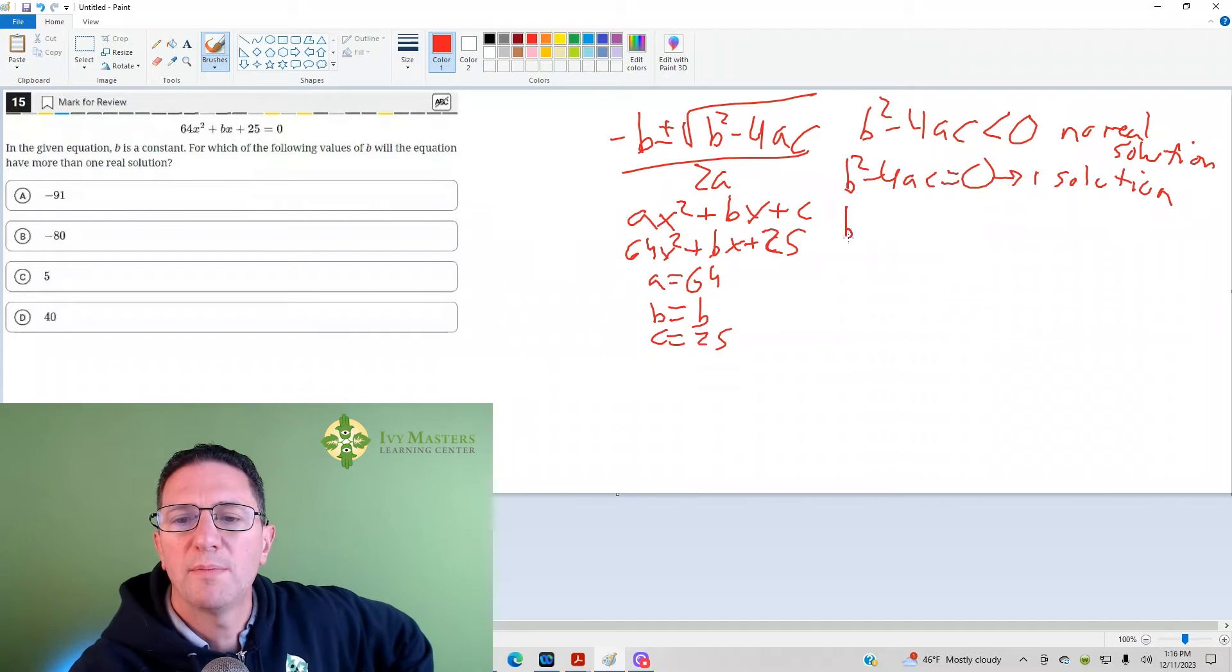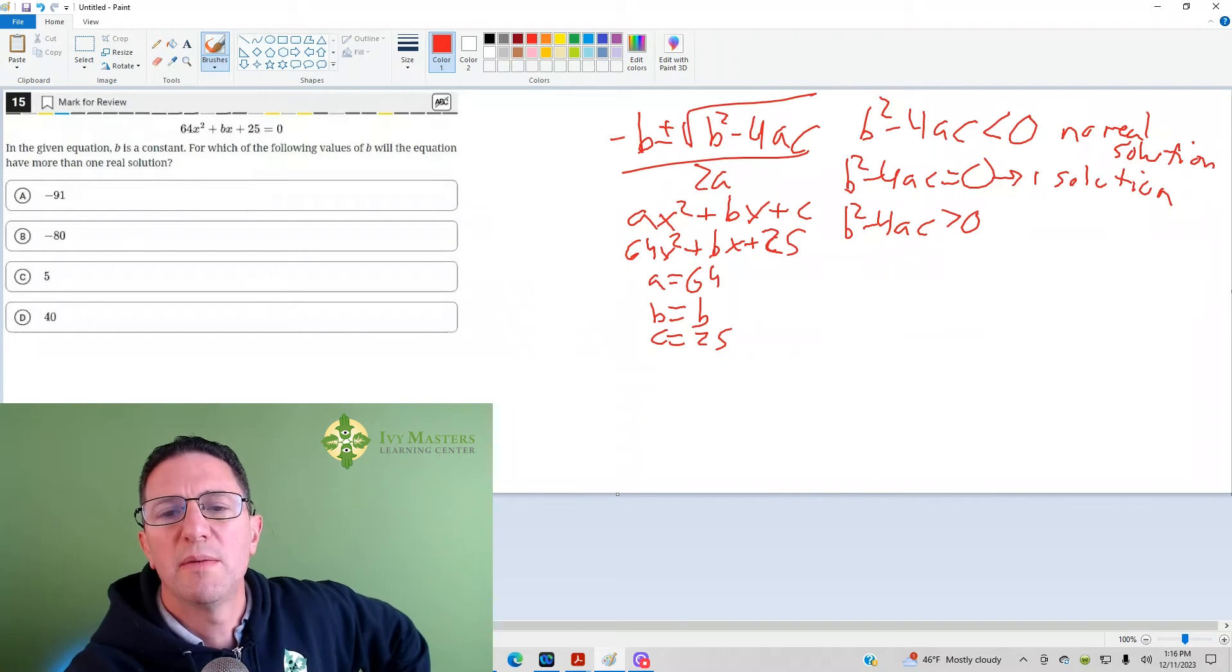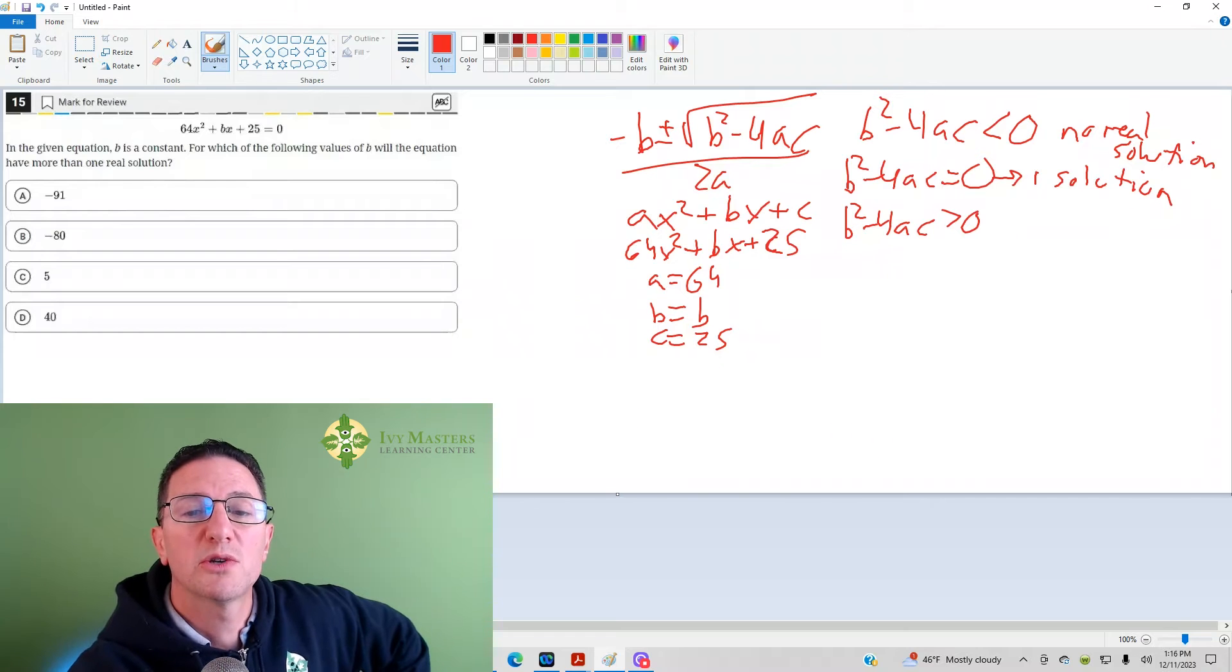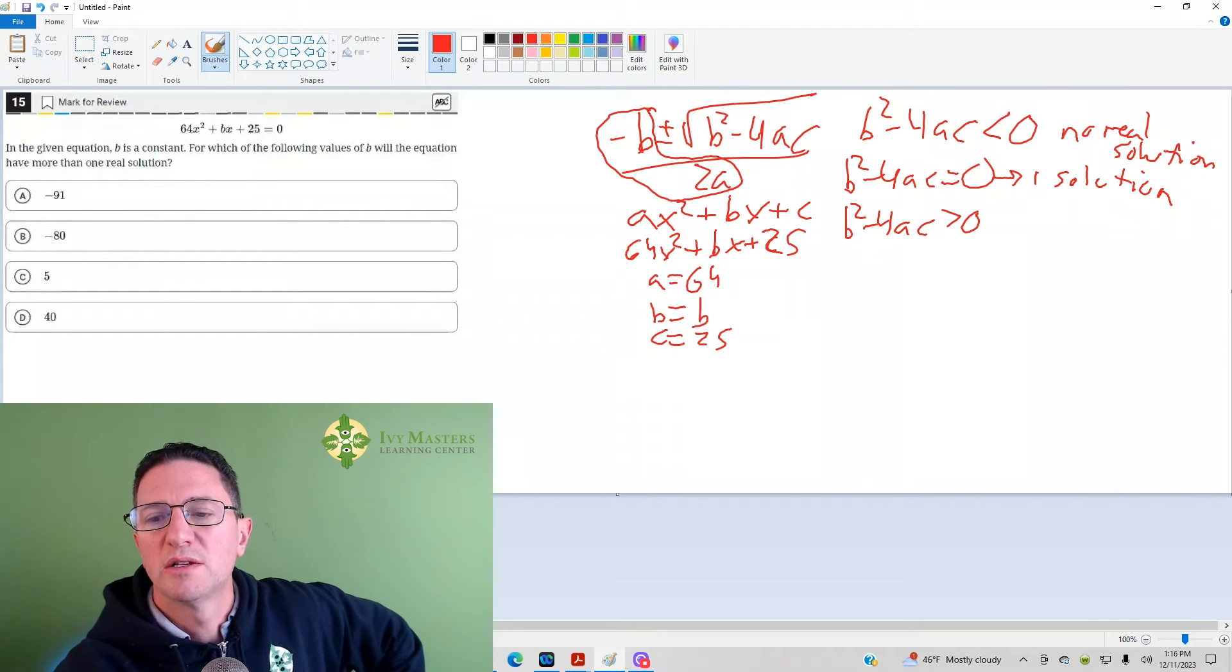What happens if b squared minus 4ac is greater than 0? What I want you to imagine is, let's say b squared minus 4ac winds up giving you 4. The square root of 4 is 2. And let's say out here you wind up getting a value of 5. Then you do 5 plus 2, you get 7. Here you get 5 minus 2, you get 3. So here you get 2 solutions.